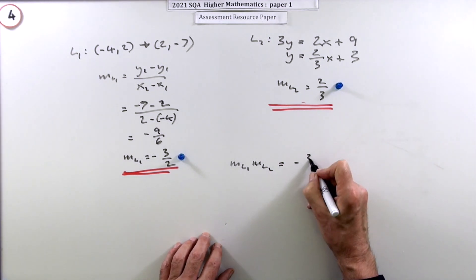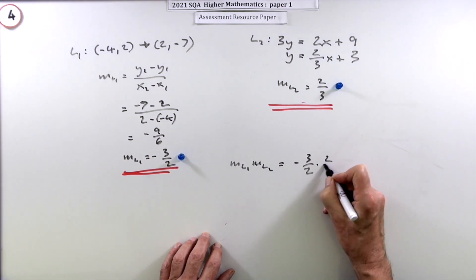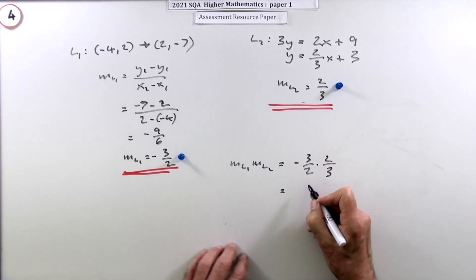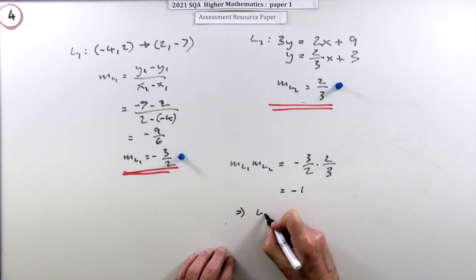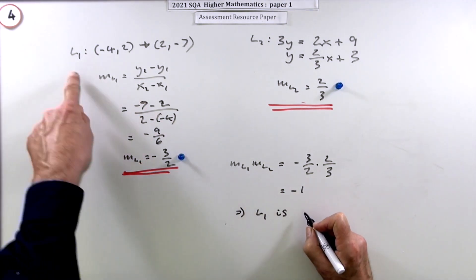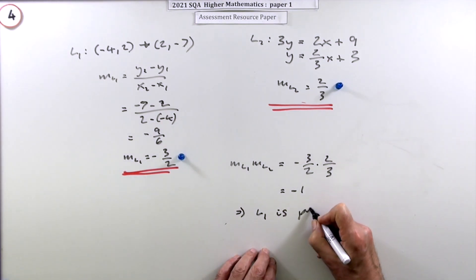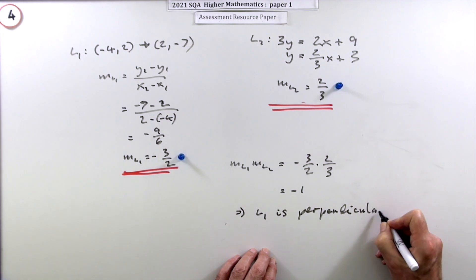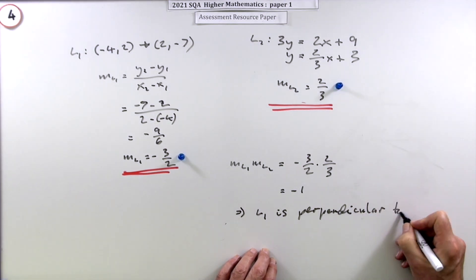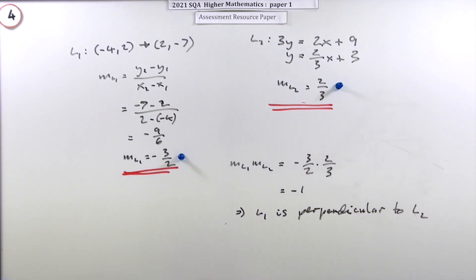M1 times M2, that's negative 3 upon 2 times 2 upon 3. Well that comes to negative 1. So now you can say: since the product of the gradients is negative 1, that means that line 1 is perpendicular to line 2. That's the third mark.